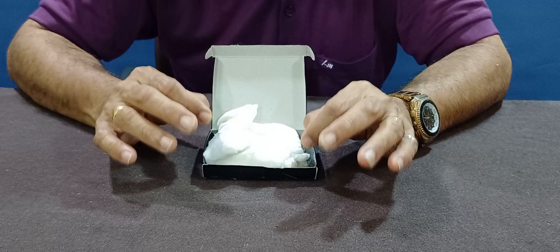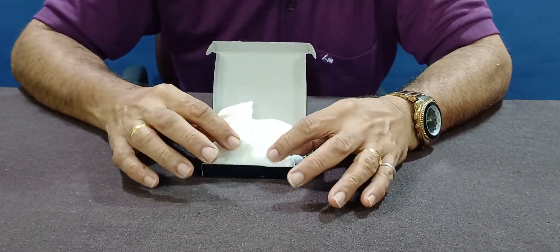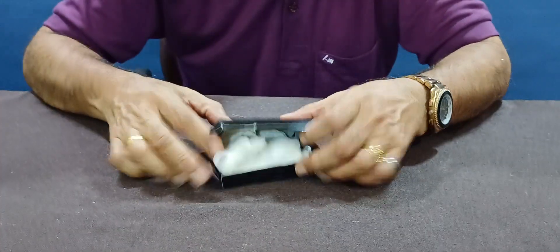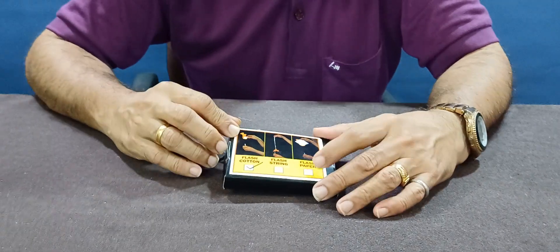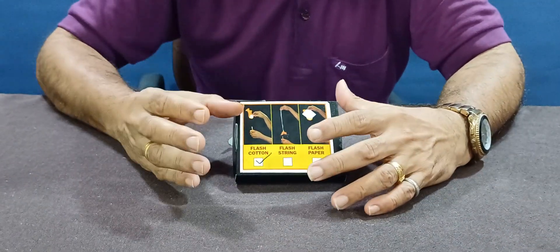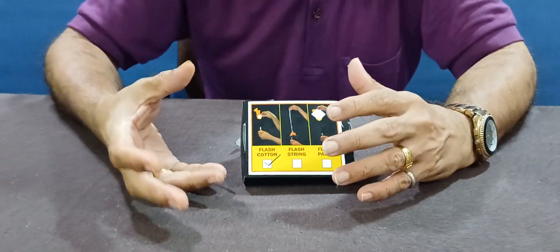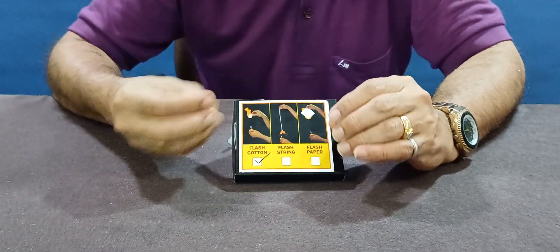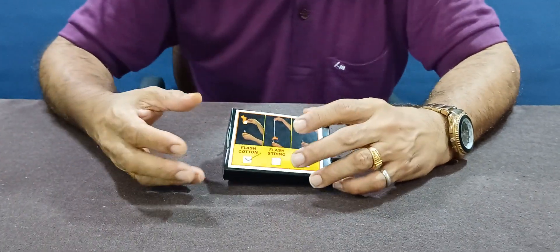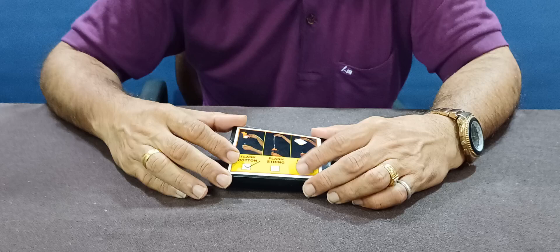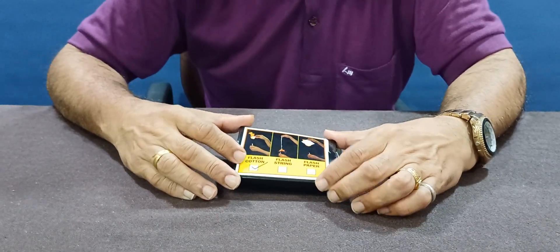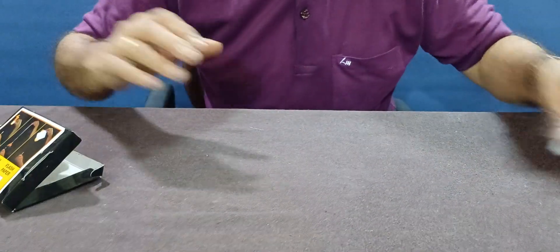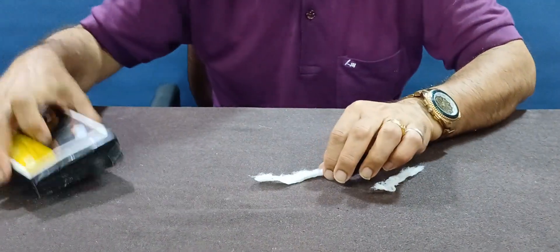No residual, and that is the beauty of flash cotton. Flash cotton is basically used in the magic industry to produce a flash and then a product, or to vanish the cotton and produce a product. It is also used in the drama and theater industry. Now I will be giving you a demo of the burning qualities of flash cotton.